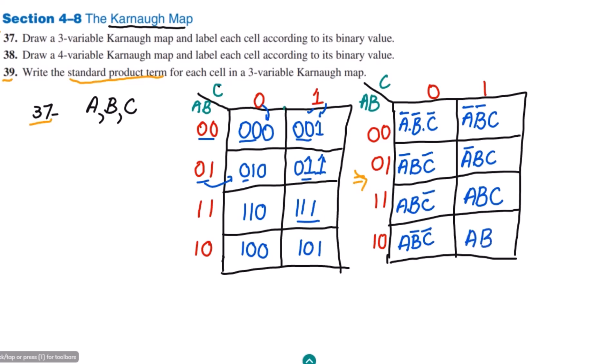So these are all the standard product terms for a three-variable Karnaugh map. We have found the way to derive them, and I will also show you how to find the same for a four-variable Karnaugh map, where the procedure remains the same — finding the product that equals 1. That's it for question 39. Take care and see you in the next video.